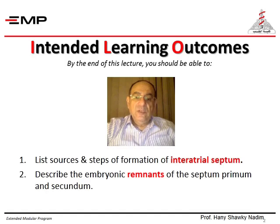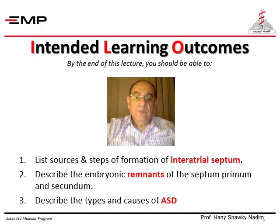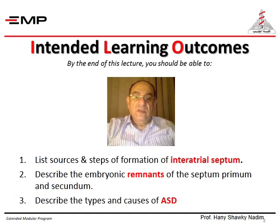Number two is to describe the embryonic remnants of this septum, the various components — septum primum and septum secundum. Number three is to describe the types and causes of defects in the inter-atrial septum, which are called atrial septal defects or ASD.